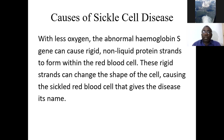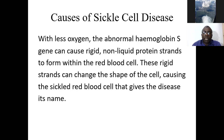With less oxygen, the abnormal hemoglobin S gene can cause rigid, non-flexible proteins to form within the red blood cells. These rigid strands can change the shape of the cell, causing the sickle red blood cells that give the disease its name. The hemoglobin that causes sickle cell disease has a sickle shape, while the normal red blood cell has a more rounded shape.